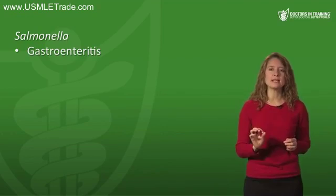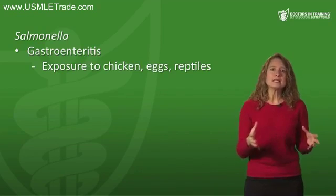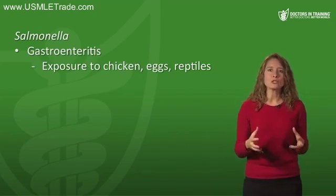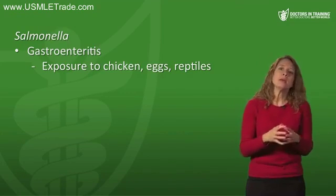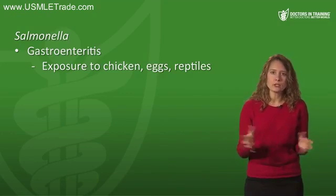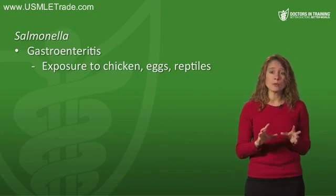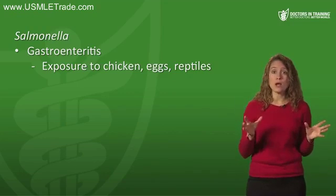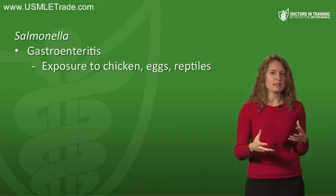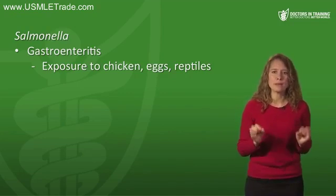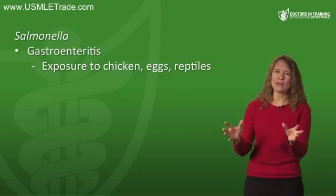The other clinical syndrome from Salmonella is gastroenteritis. In the United States, Salmonella infection is often from exposure to chicken or eggs. Salmonella can actually enter the egg during development and survive within it, making any raw egg a potential exposure. The egg shells can also be contaminated, so remember raw chicken and raw eggs for Salmonella.